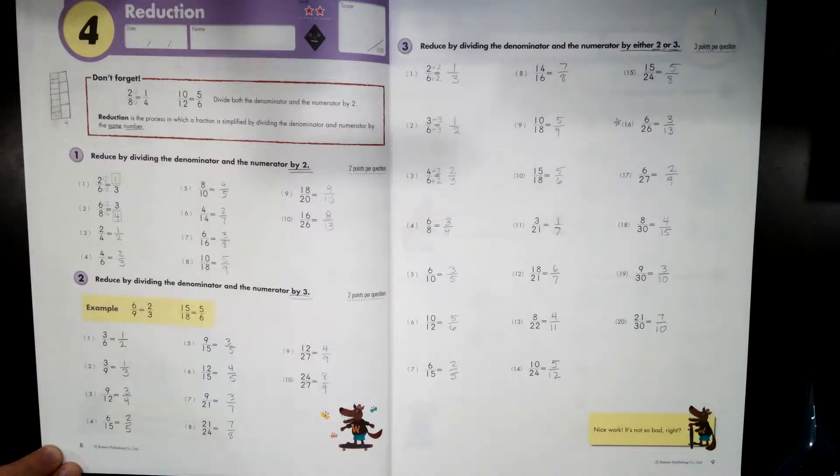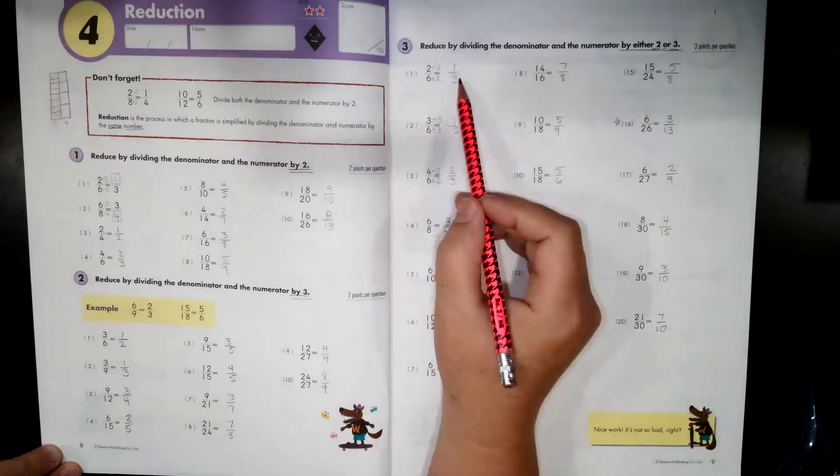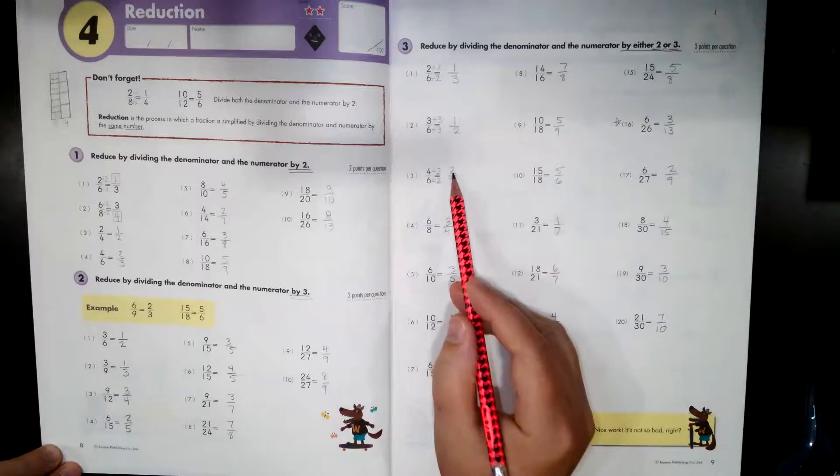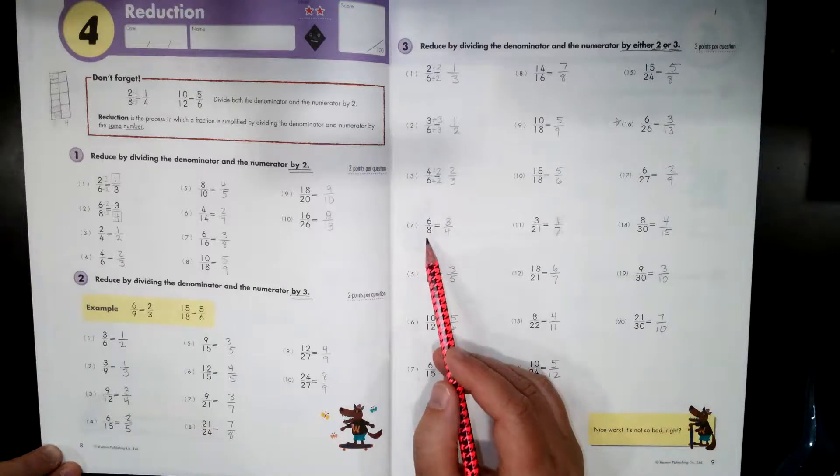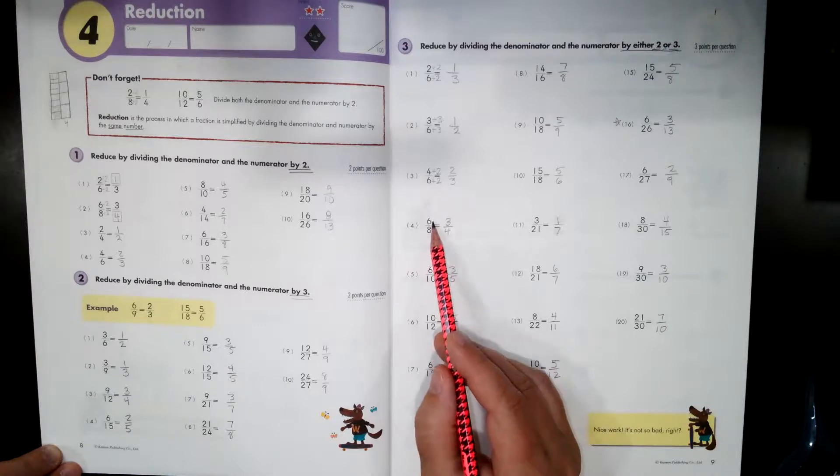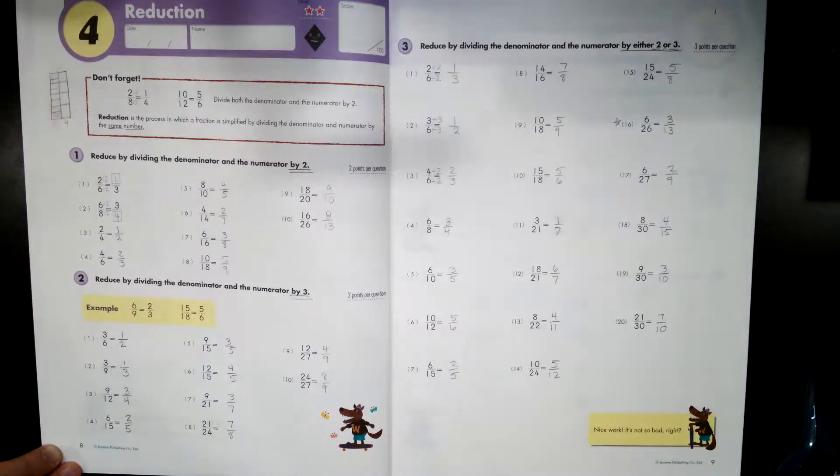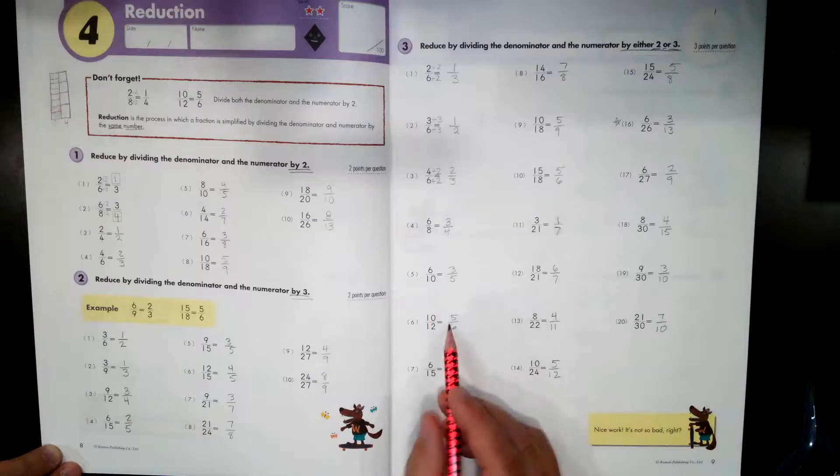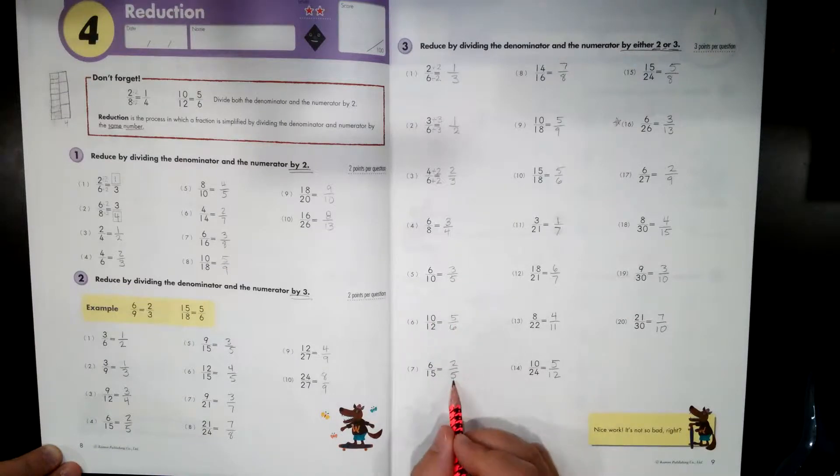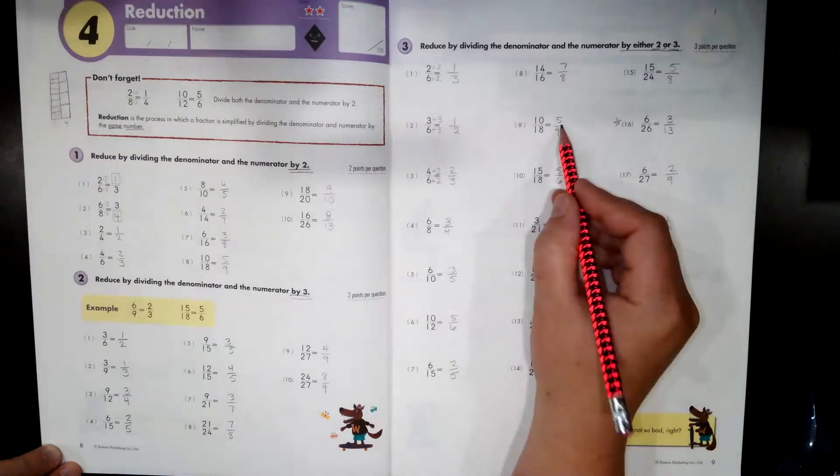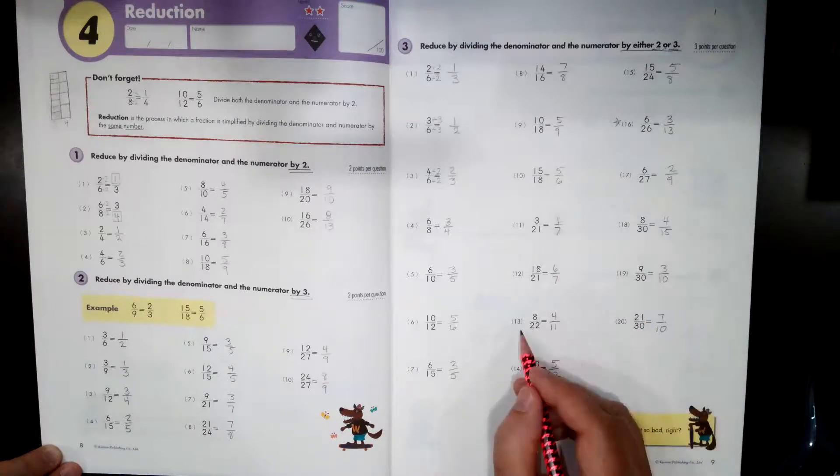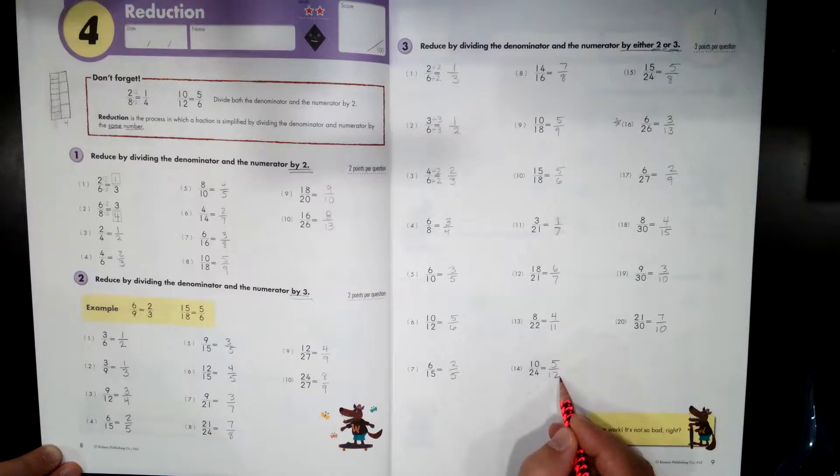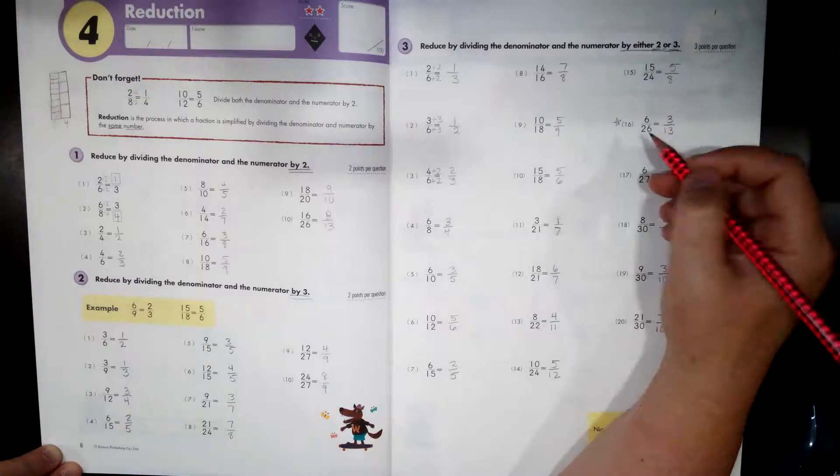All right, here are all of the answers. So check your work. Make sure you have all the answers. I'll read through them. So number one is one third, two, one half, three, two thirds, four, three fourths. Now here is one. The six could be divided by a two or three, but the eight can't. Did you notice? So you have to check the top and the bottom because it must be the same number you divide by on the top and the bottom. Five is three fifths. And then we have number six is five sixths. Seven is two fifths. Eight is seven eighths. Nine is five ninths. Ten is five sixths. Eleven is seven sevenths. Twelve is six sevenths. Thirteen is four elevenths. Fourteen is five twelfths. Fifteen is five eighths. Sixteen.